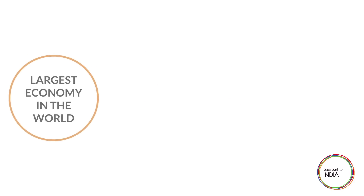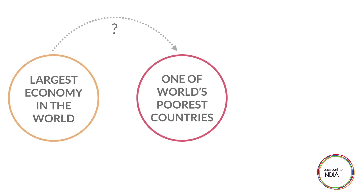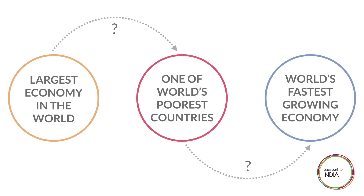What we haven't discussed is the in-between. How exactly did India go from being the world's largest economy to one of its poorest? And how did it get back to becoming the world's fastest growing economy again?